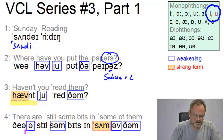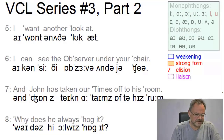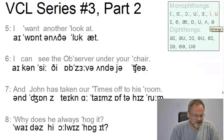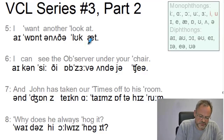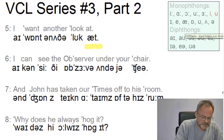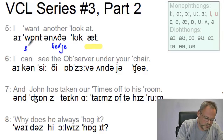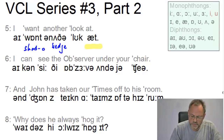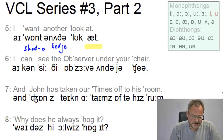Let's continue with lines five to eight. In line five, 'I want another look at' — quite interestingly, we have a strong form of 'at' at the end; we will discuss this in a moment. We also have the wedge and the short o as in 'want'. Line six: 'I can see the observer under your chair.' Again, there is a linking effect — we will talk about it in a second.